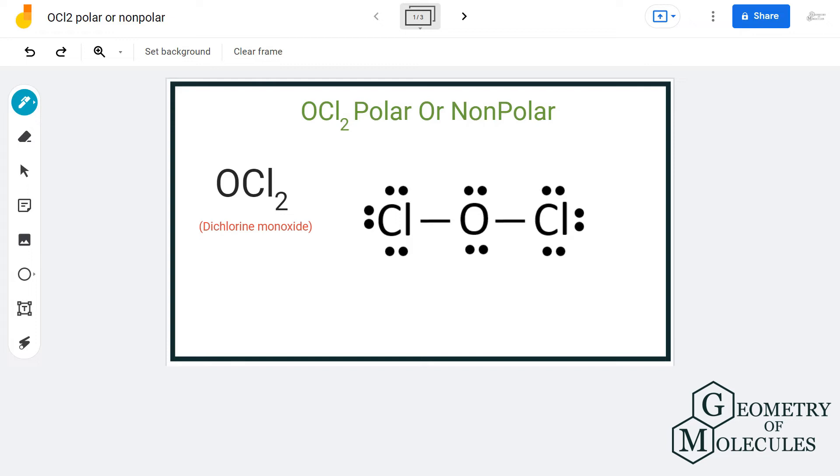As this molecule is a bent molecule, the charges will not be distributed evenly. Whenever there is a bend in this molecule according to VSEPR theory, or whenever there are lone pairs present on the central atom, it leads to uneven distribution of charges.